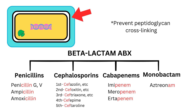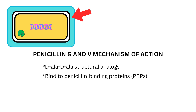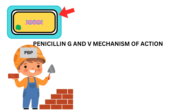You need to remember specifically how penicillin G and V work. Penicillin G and V look like D-alanine-D-alanine, so they can bind to the penicillin-binding proteins, which are enzymes that normally help build the bacterial cell wall. Think of penicillin-binding proteins as the construction workers of the bacterial cell wall — they take the D-alanine-D-alanine bricks and stack them together to make the peptidoglycan cell wall.